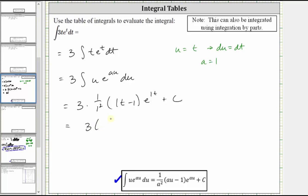We have three times the quantity t minus one, times e to the power of t plus c. So this is the factored form of the antiderivative.